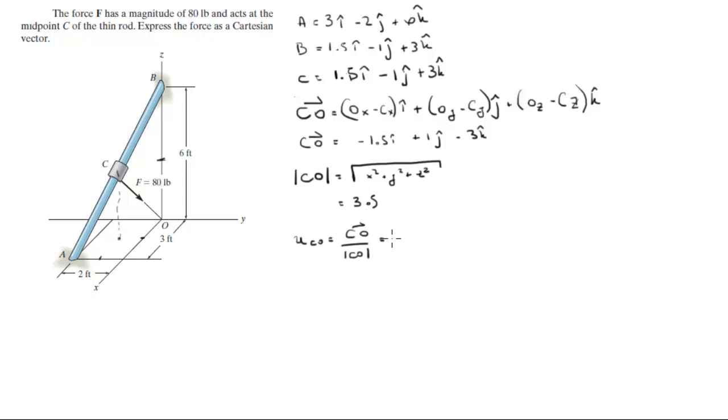And when you do, you're going to get that the unit vector is negative 0.429i plus 0.286j minus 0.857k.